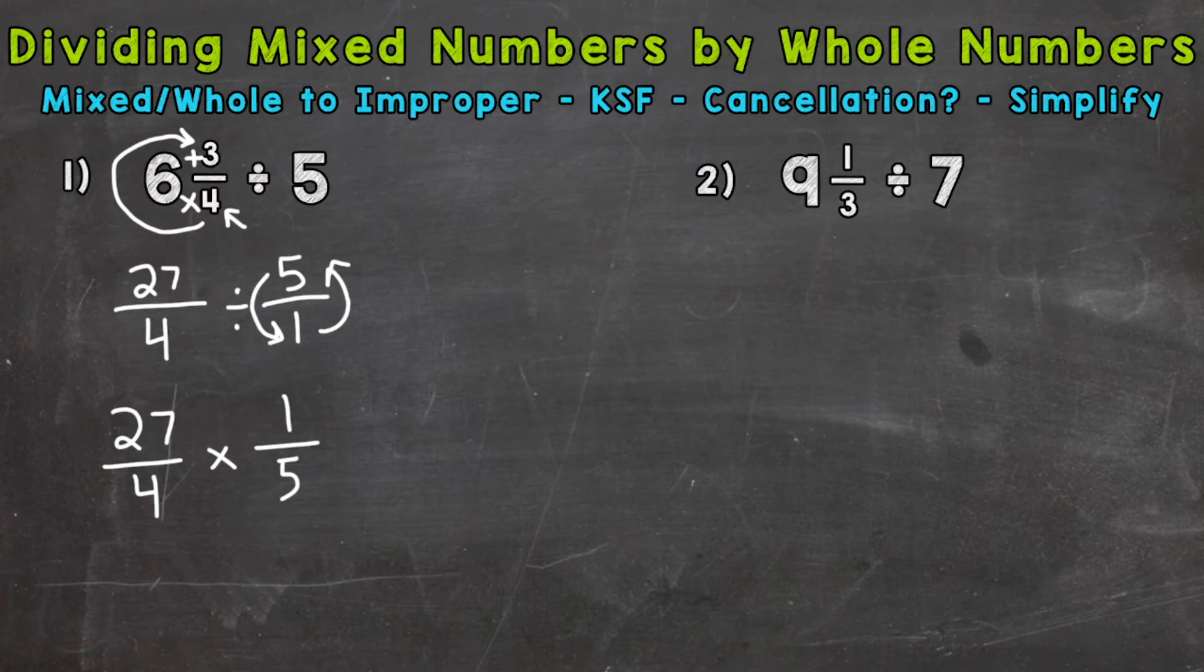We're now ready to multiply straight across. But before doing so, we can always check to see if we can use cancellation. Now cancellation, you can think of it as simplifying the problem before you multiply. So what we need to do, we need to look for common factors between our numerators and denominators. Now, in the case of number 1, the only common factor we have between our numerators and denominators is 1. So we cannot use cancellation.